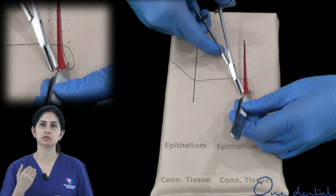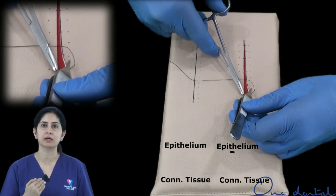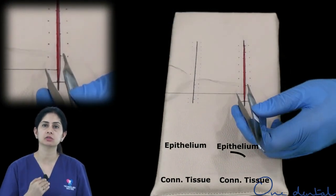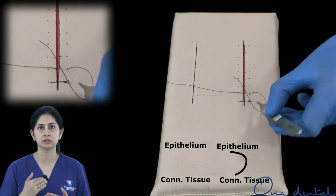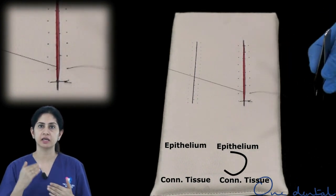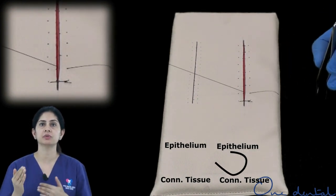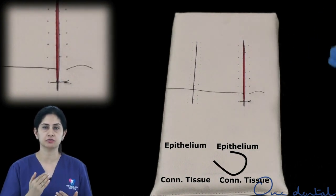The suture needle passes from the base of the papilla, apical to the base of the papilla, from the buccal, outside in — that is, from epithelium to connective tissue.